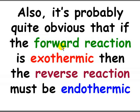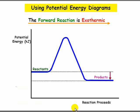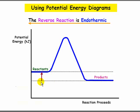It's quite obvious that if the forward reaction is exothermic, then the reverse reaction must be endothermic, or vice versa. For example, in this reaction, the forward reaction is exothermic — delta H is negative. But if we look at the reverse reaction, it's endothermic — delta H is positive.